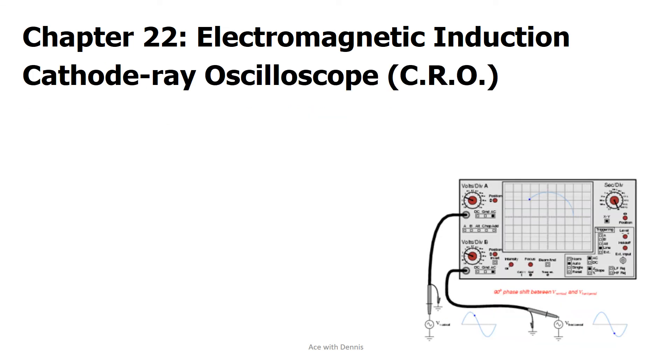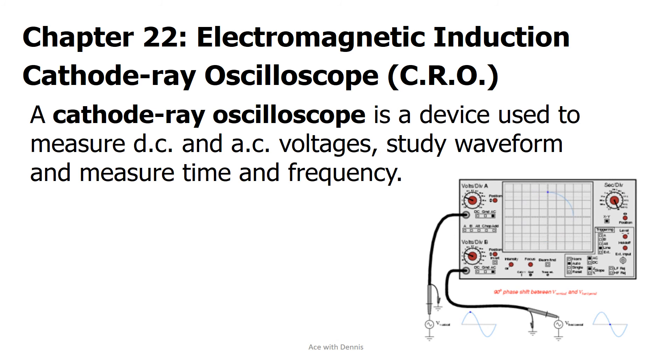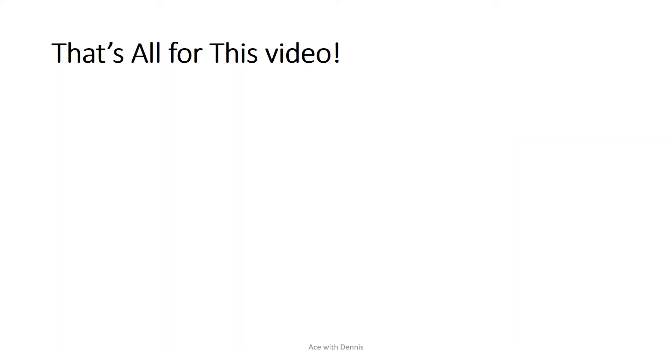Cathode ray oscilloscope, CRO. A cathode ray oscilloscope is a device used to measure DC and AC voltages, study waveform, and measure time and frequency. That's all for this video.